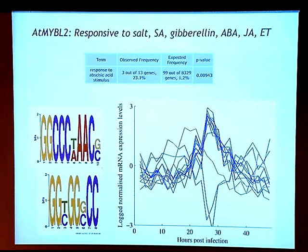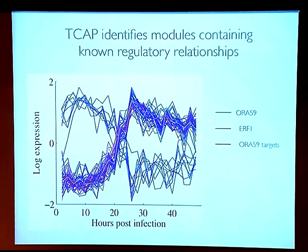Another module identified by TCAP contained WRKY59, ERF1, and five known WRKY59 targets. Interestingly, our time series resolution was not enough to pick up a difference between the regulator and its targets — even with two-hour time points, WRKY59 and its targets showed clearly correlated expression. But this module did predict additional targets, both repressed and activated, of those two transcription factors.